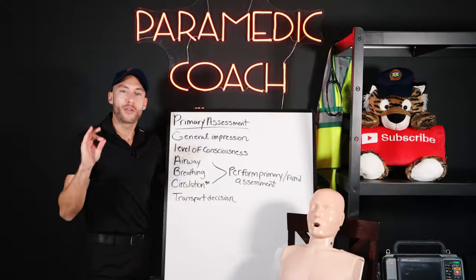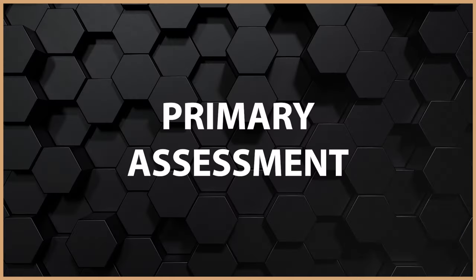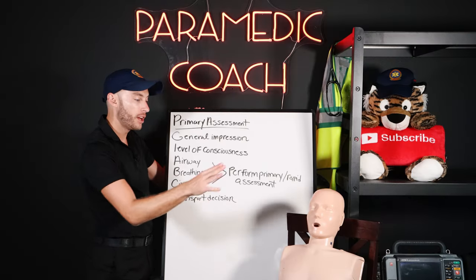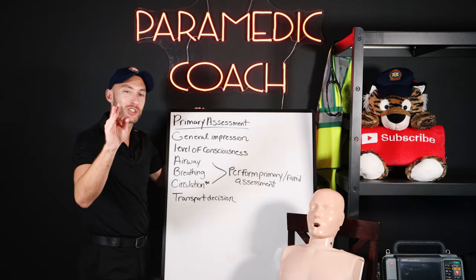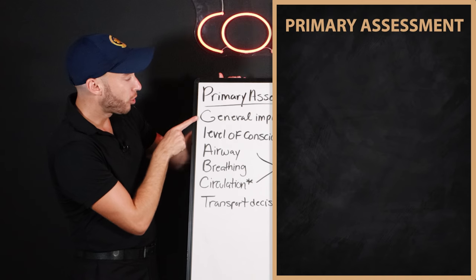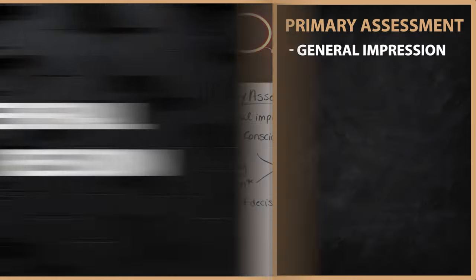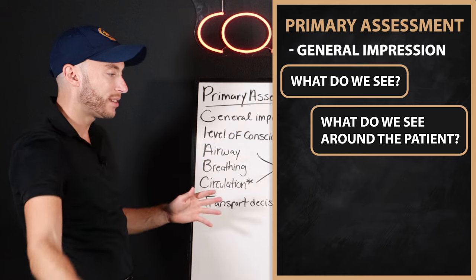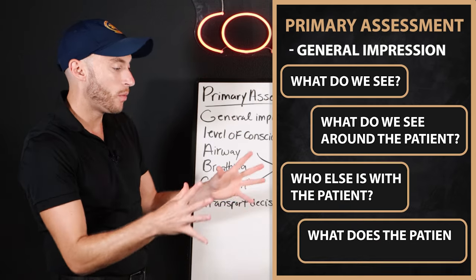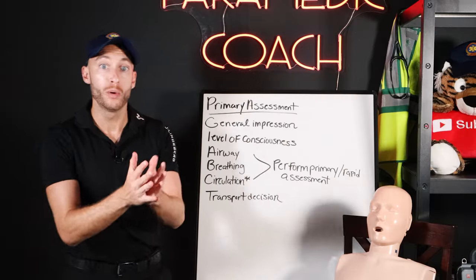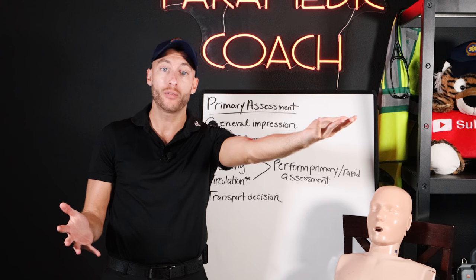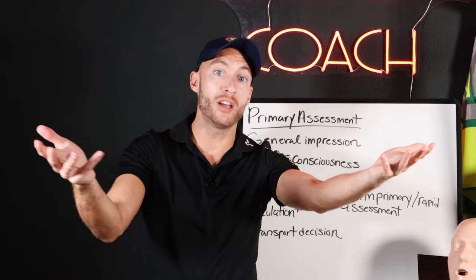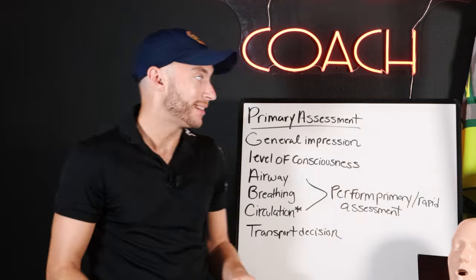The first thing to remember with the primary assessment is to expose your patient. This patient was wearing a hat and shirt — expose the patient. That's especially key in traumatic calls. Starting the primary assessment, the general impression is what we first see when we walk up: what do we see around the patient and the scene, who else is with the patient, and what does the patient look like? Two extreme examples: an 80-year-old female sitting on the couch who appears to be breathing, versus a 10-car MVA with patients all over the freeway — two very different scenes.